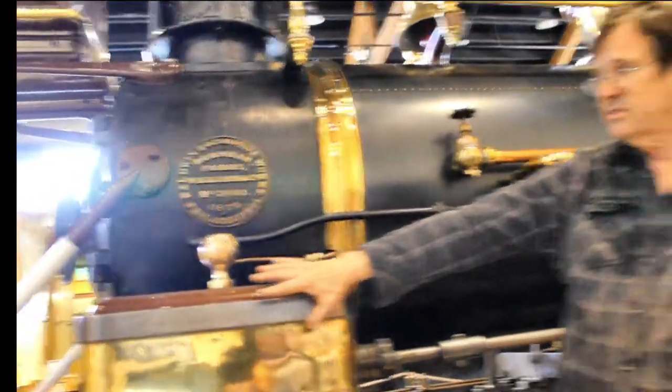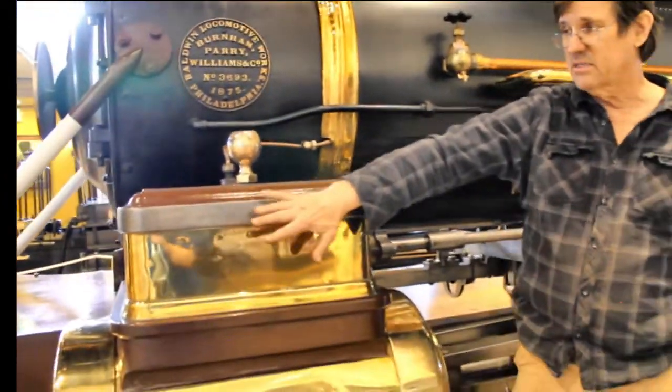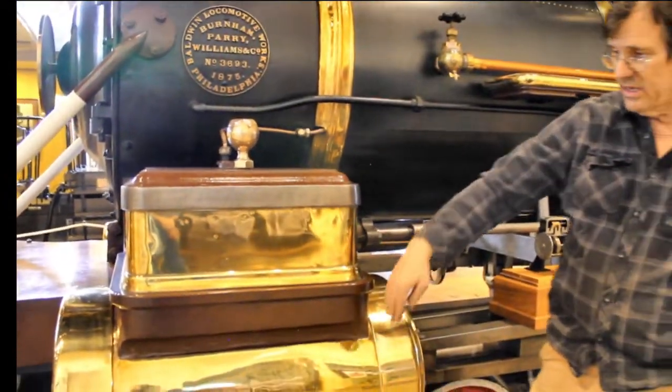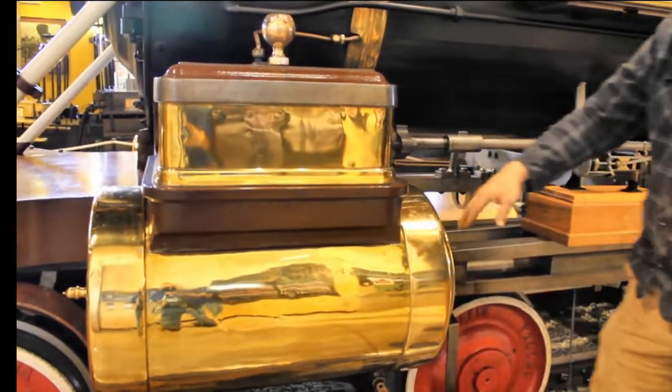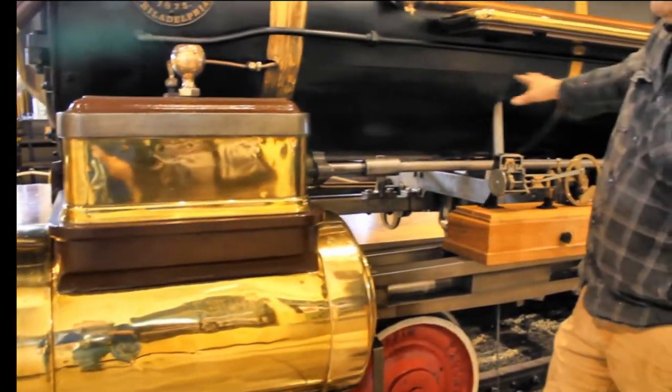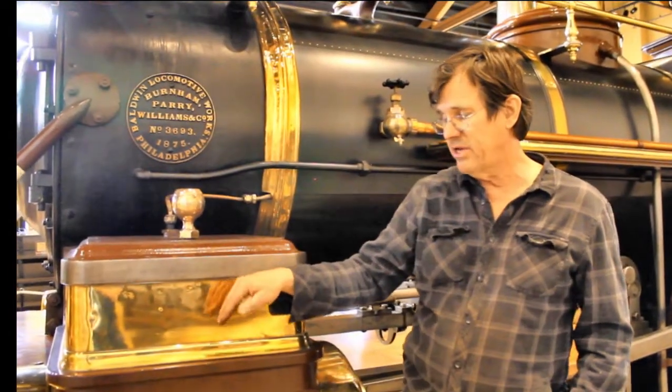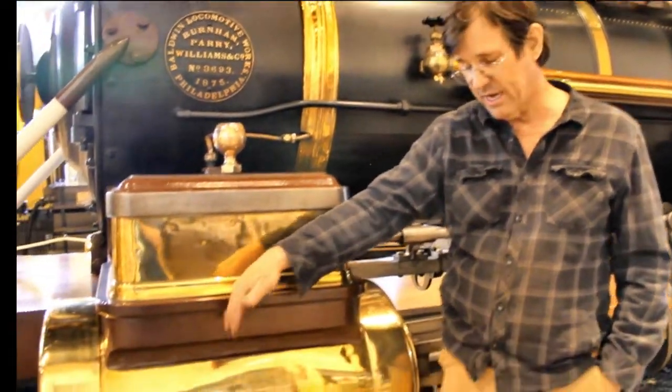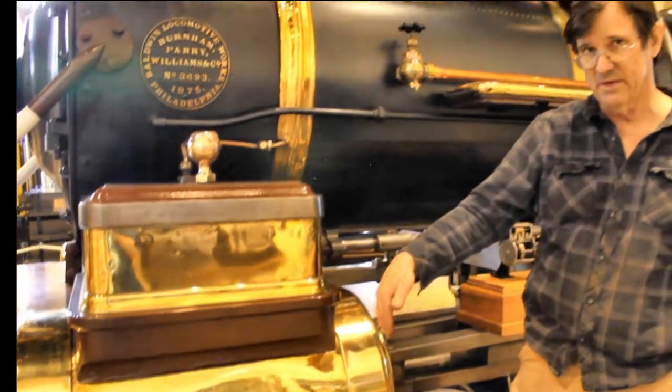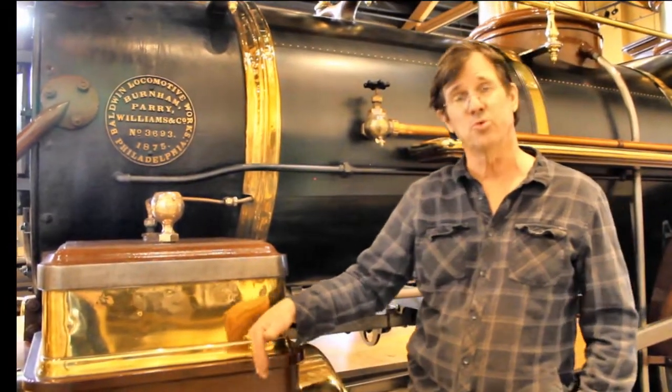The steam chest has a valve in it that slides back and forth in concert with the piston through a mechanism back underneath the locomotive. And what it does is it allows steam to be admitted either on the front side or the back side of the piston at the right time to do the most work.